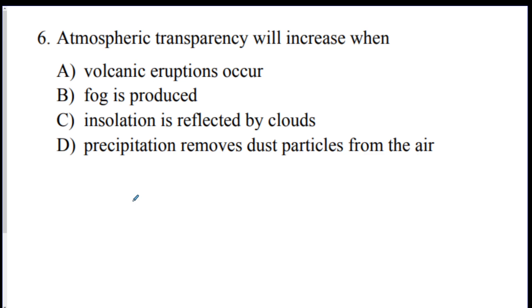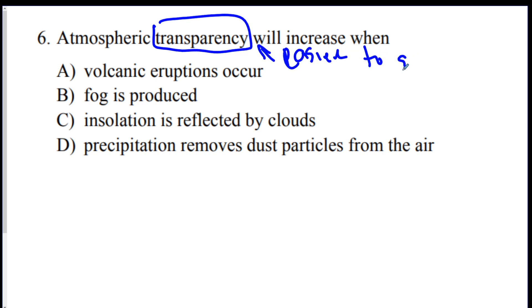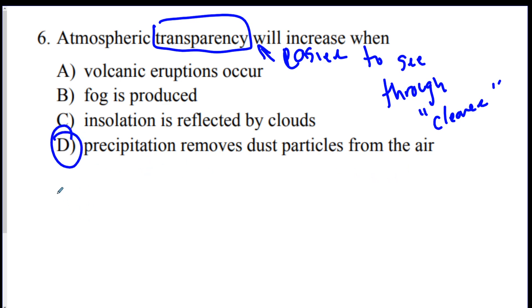Number six: atmospheric transparency will increase when which of these things happens? Transparency means how see-through the atmosphere is — cleaner air. Precipitation cleans the atmosphere of dust and debris, so the answer is D. Fog reduces transparency, volcanic eruptions shoot dirt into the air reducing transparency, and insolation reflected by clouds doesn't pertain here.